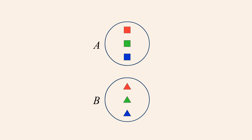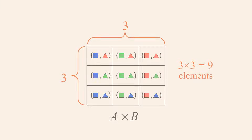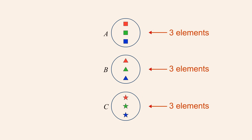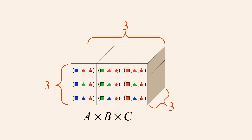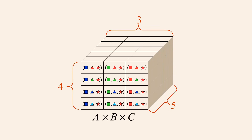In the first example, we formed the Cartesian product of two sets each containing three elements. The resulting Cartesian product fit into a three-by-three grid containing nine elements. When we form the Cartesian product of three sets each containing three elements, the resulting Cartesian product fit into a three-by-three-by-three grid containing twenty-seven elements. If sets A, B, and C had contained three, four, and five elements, then the number of elements in their Cartesian product would be three times four times five, or sixty elements.